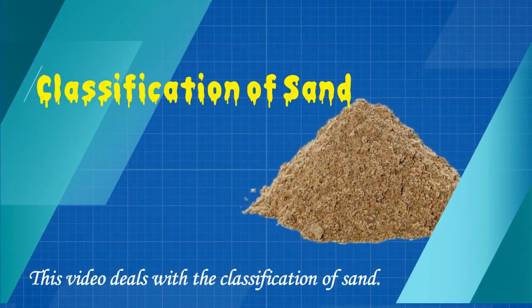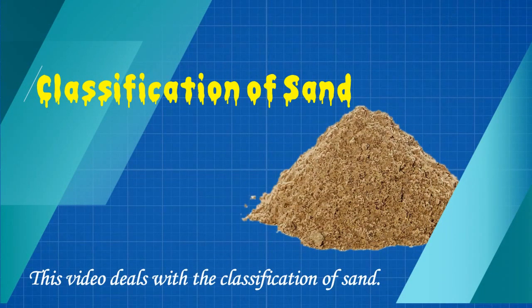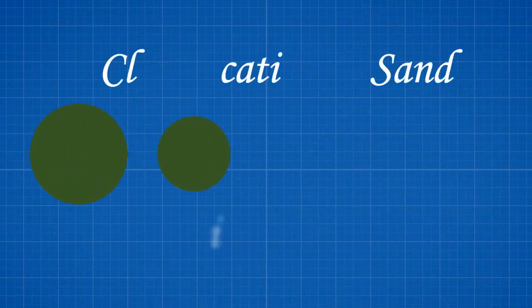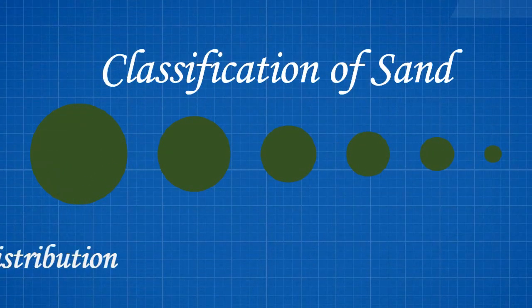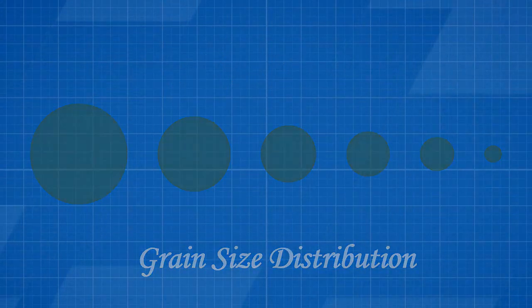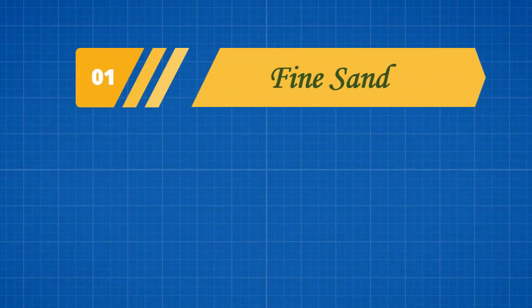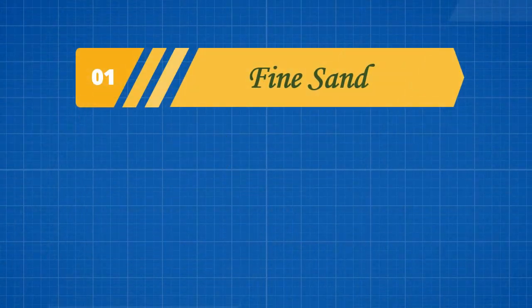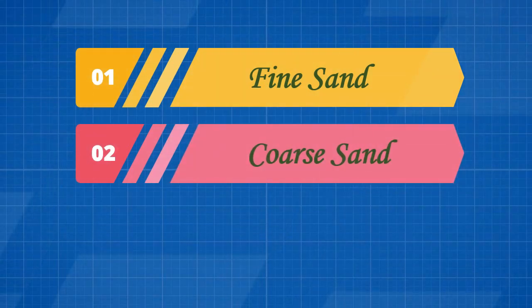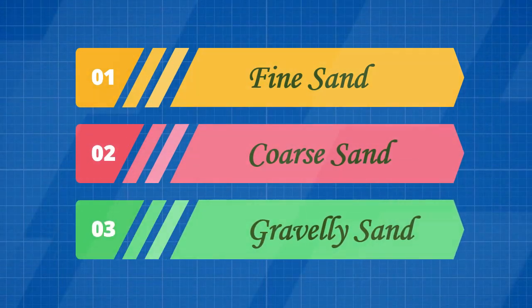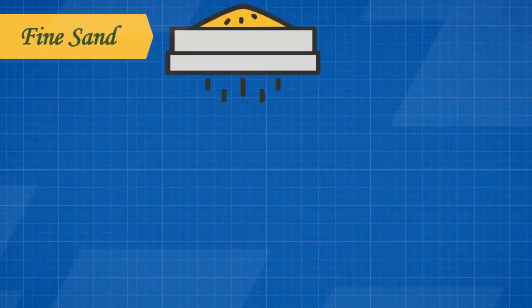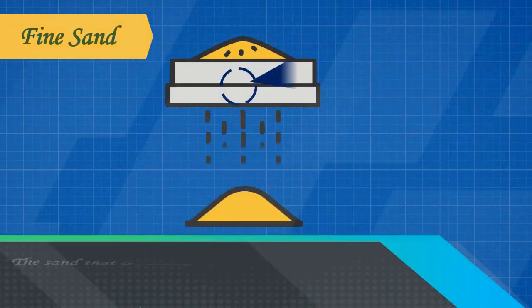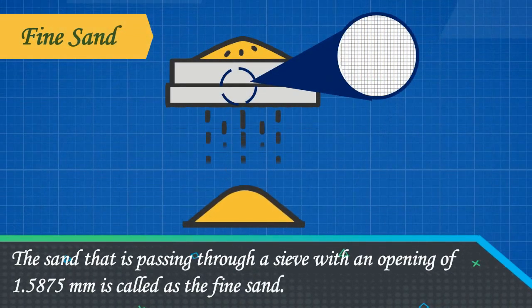This video deals with the classification of sand. Sand is classified based on the grain size distribution as fine sand, coarse sand, and gravelly sand.